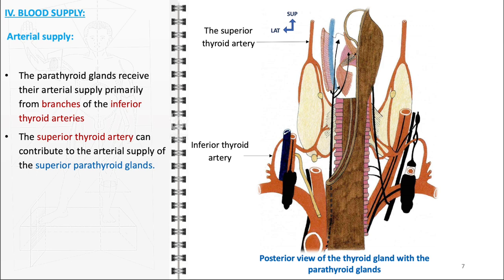Originating from the external carotid artery, the superior thyroid artery branches off to provide blood flow to the upper portions of the thyroid gland and, in many cases, extends this supply to the superior parathyroid glands. This dual arterial supply ensures that the parathyroid glands receive a consistent and adequate blood flow, crucial for maintaining their vital role in regulating calcium and phosphorus levels in the body.